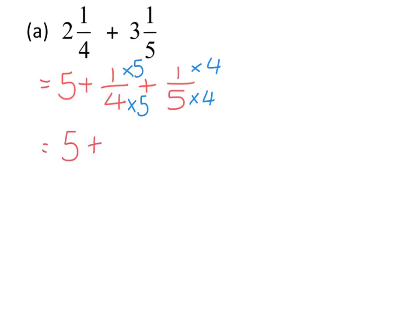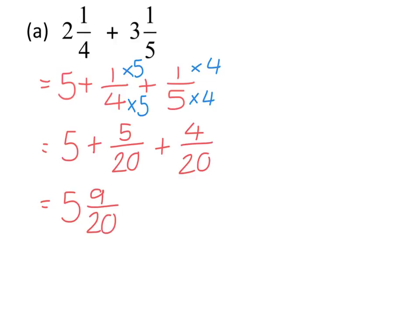That gives us 5, plus 5 twentieths and 4 twentieths. Altogether that is 9 twentieths, so we have 5 and 9 twentieths. 9 twentieths doesn't simplify, so 5 and 9 twentieths is the final answer.